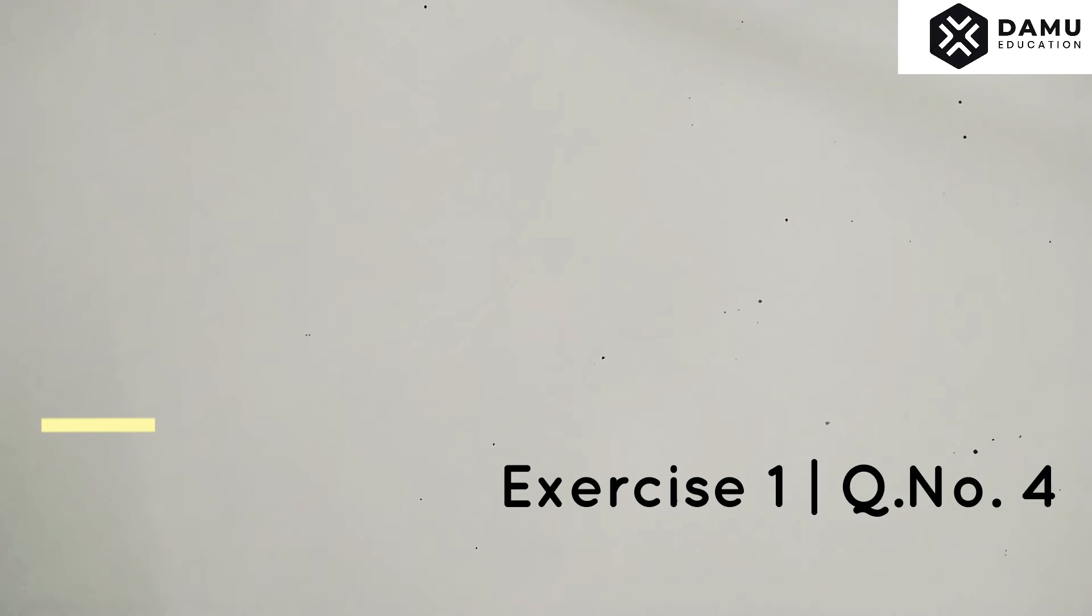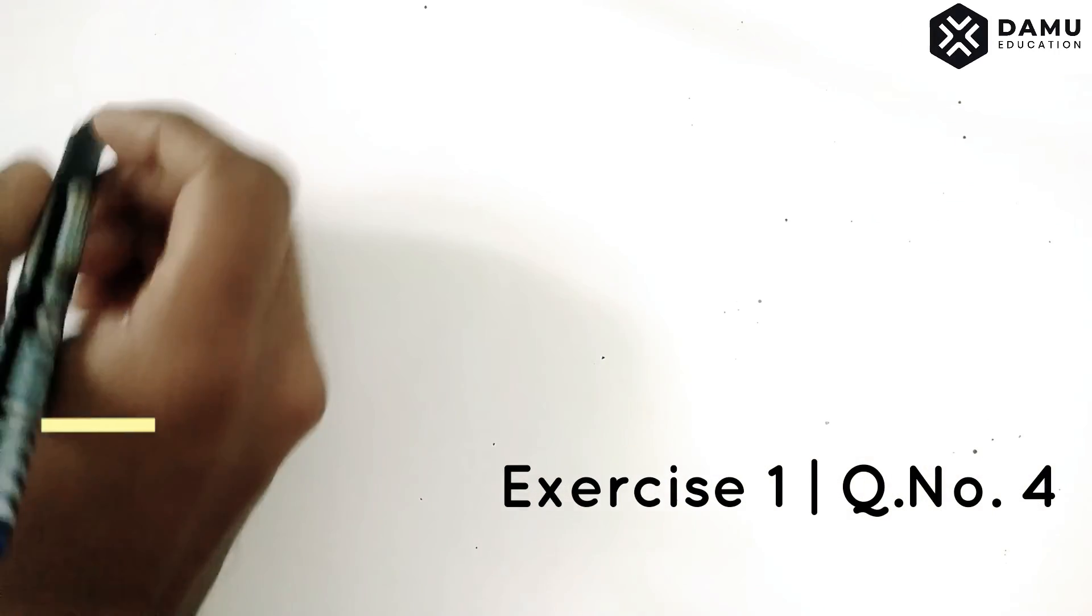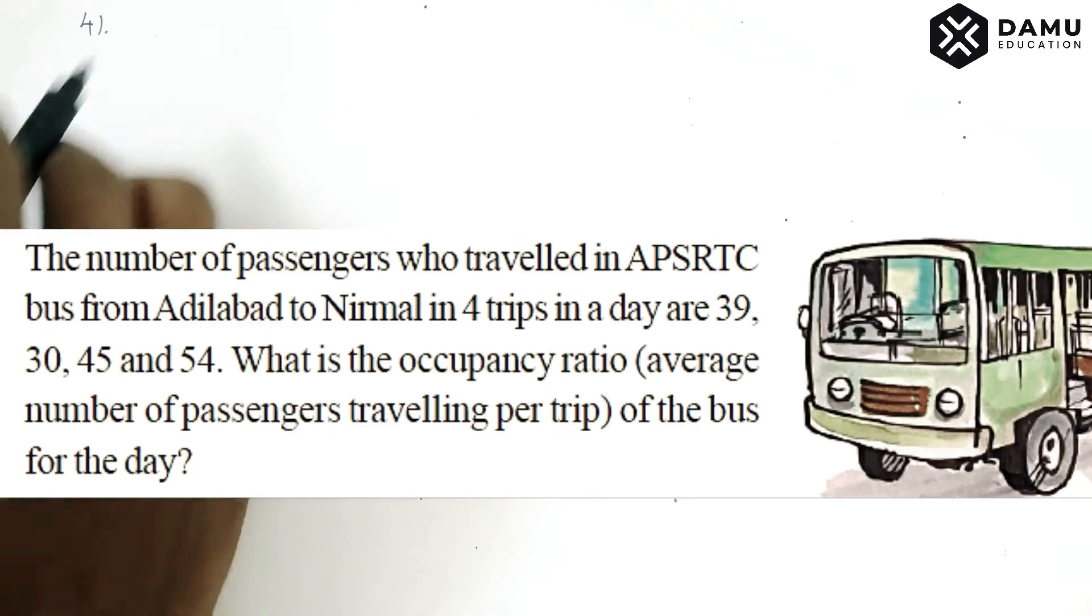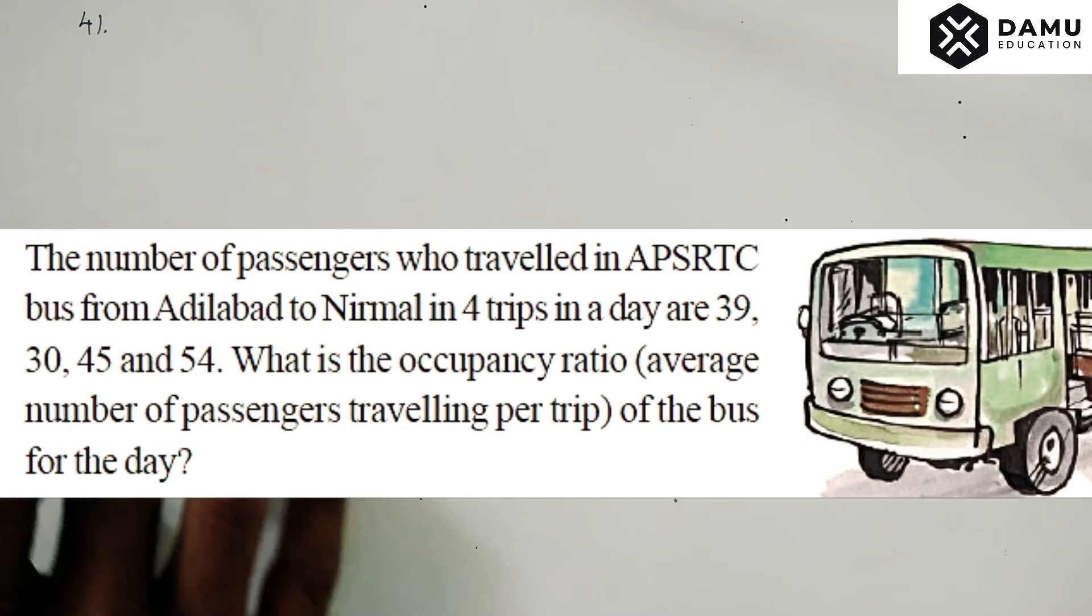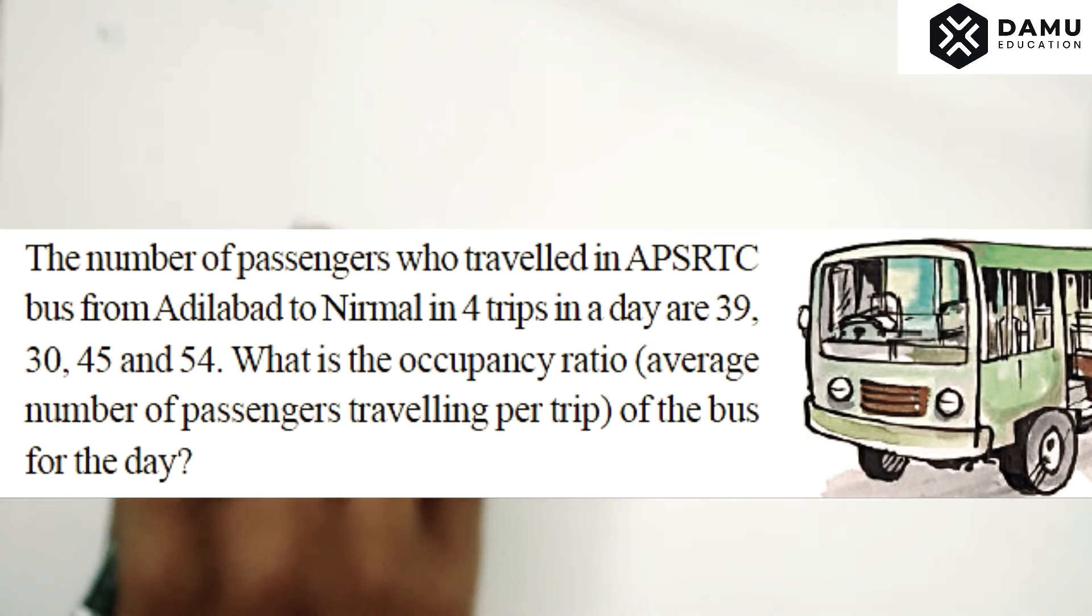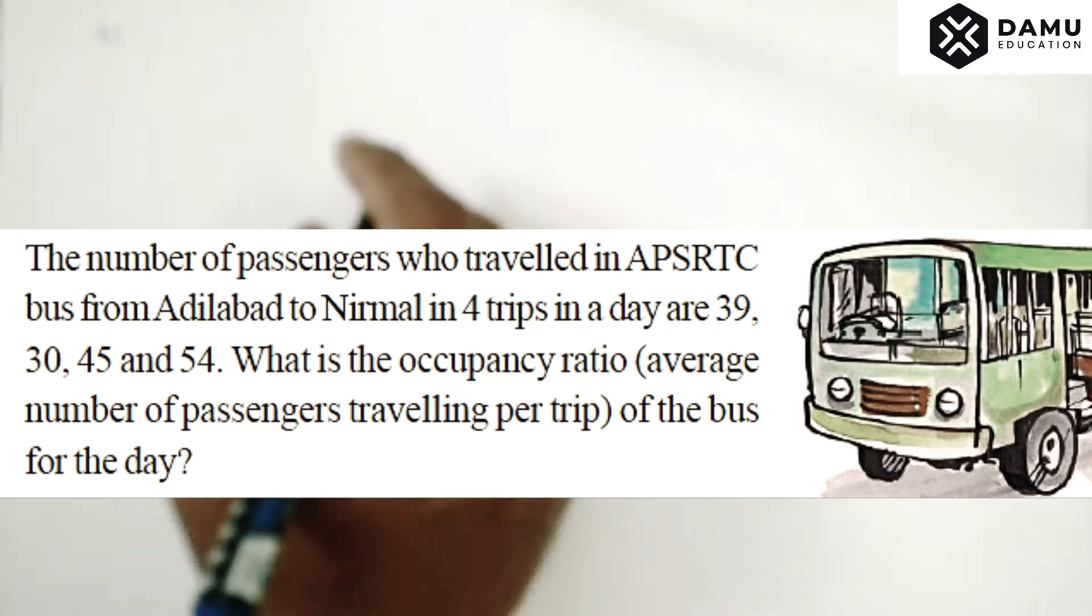Hello, yes in this session we're going to discuss the answer for the fourth question. The question is: the number of passengers who traveled in APSRTC bus from Adilabad to Nirmal in four trips in a day are 39, 30, 45, and 54.